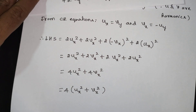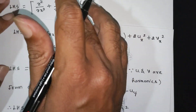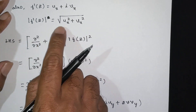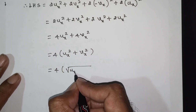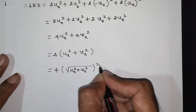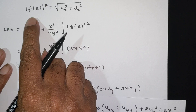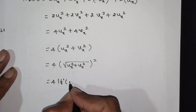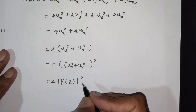Now using the Cauchy-Riemann equations: ux = vy and vx = −uy. Substituting uy = −vx and vy = ux, we get LHS = 2ux² + 2vx² + 2vx² + 2ux² = 4ux² + 4vx² = 4(ux² + vx²), which equals 4|f'(z)|².